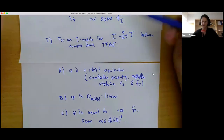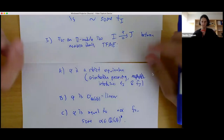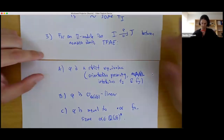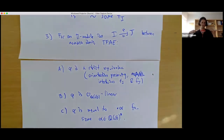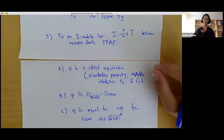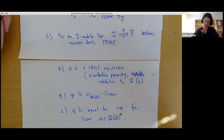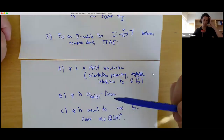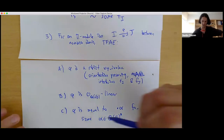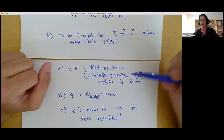Part C is that phi is equal to multiplication by alpha for some unit alpha in our field. This tells you that you can understand everything about binary quadratic forms of discriminant D just by studying linear data over this ring of integers. All you need to know is ideals and when they are isomorphic as O_F-modules.